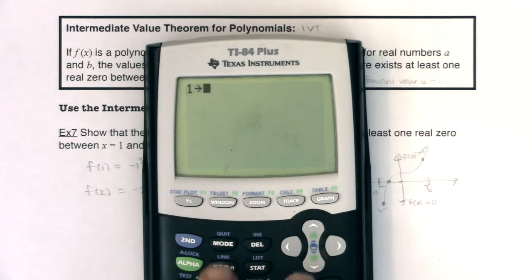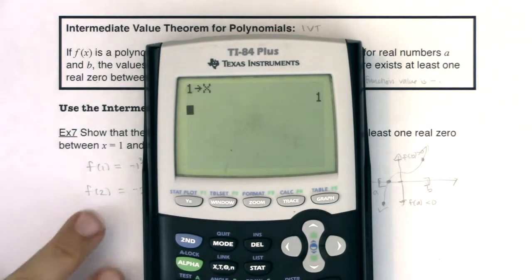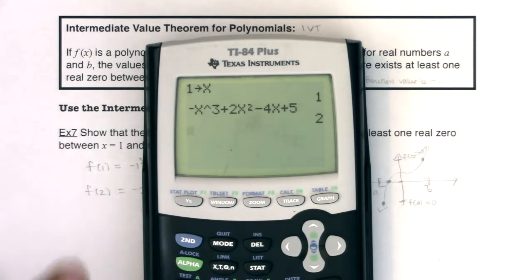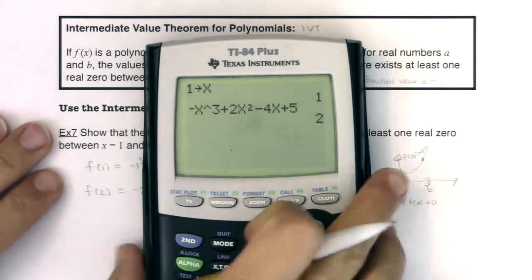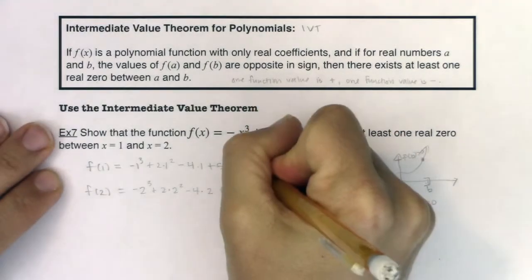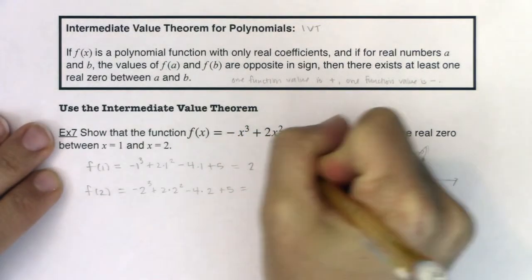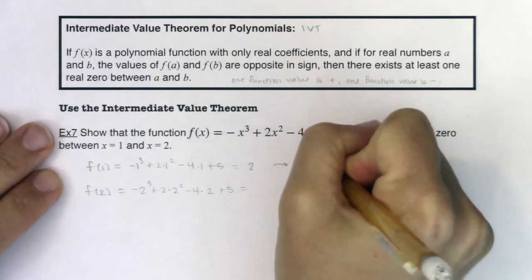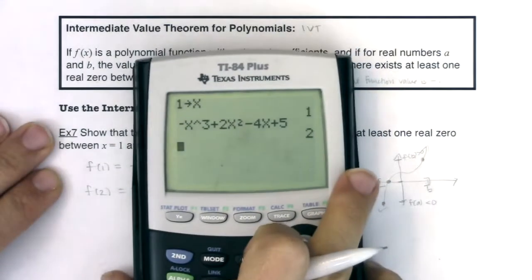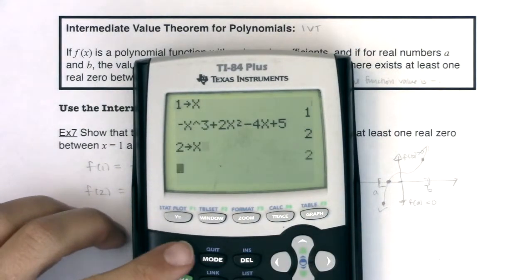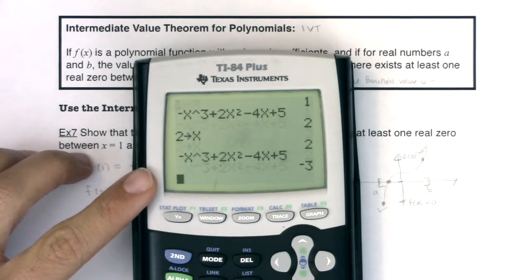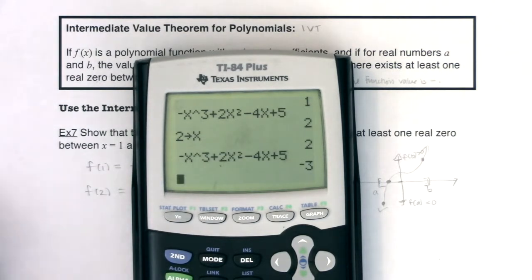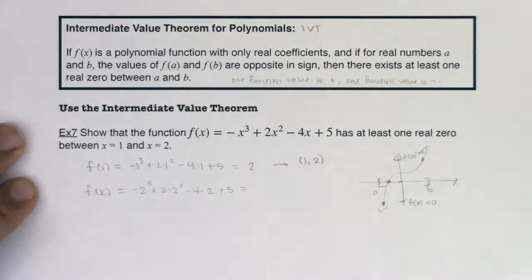So what I'm going to do is I'm going to store 1 into x. And then I'm going to crunch my polynomial, -x³, plus 2x², minus 4x, plus 5. It looks like that y value was 2, or that function value is 2. So I have the ordered pair (1, 2) here. And then let me repeat this process for 2. Now let me store 2 into x and run that calculation again. It looks like I would have come back out with a y value of -3.